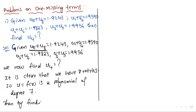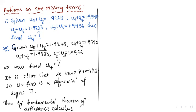By the fundamental theorem of difference calculus, for a polynomial of degree 7, the 8th order forward difference is zero. That is, del power 8 into f of x is equal to 0, since higher order differences beyond the degree vanish.